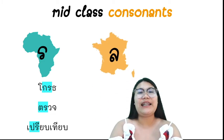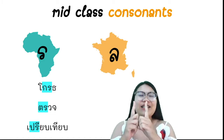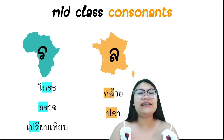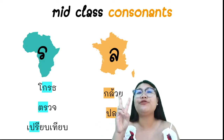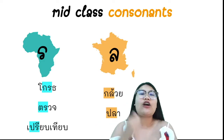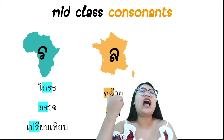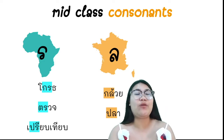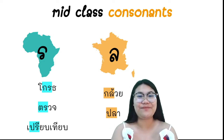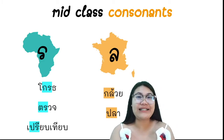For รอลิง as the second consonant with middle-class consonants, we have only two consonants: กอไก่ and ปอปลา. They come with รอลิง. Here is the word กล้วย, which means banana. And the word ปลา, which means fish.